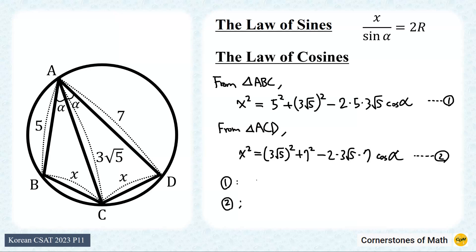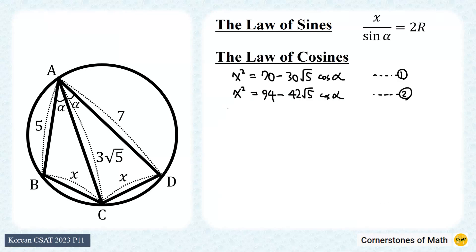If we simplify the numbers a bit, the first equation becomes x square equals 70 minus 30 square root of 5 cosine alpha. And the second equation becomes x square equals 94 minus 42 square root of 5 cosine alpha. Here, we can simply eliminate x by subtracting equation 2 from equation 1. This gives 0 equals minus 24 plus 12 square root of 5 cosine alpha. Therefore, cosine alpha equals 2 over square root of 5.